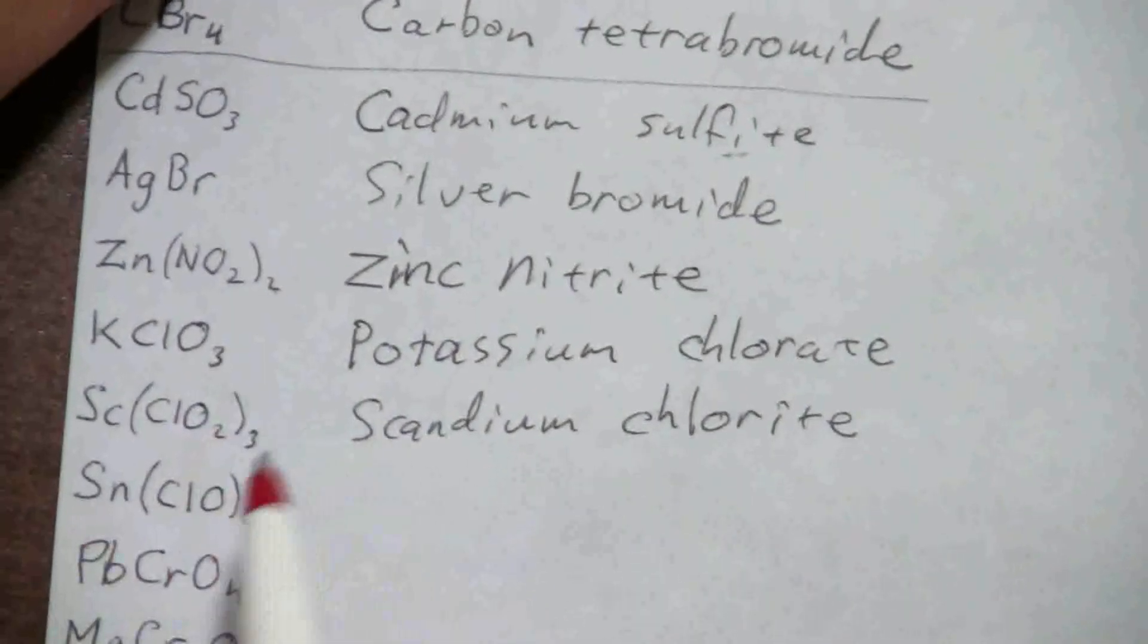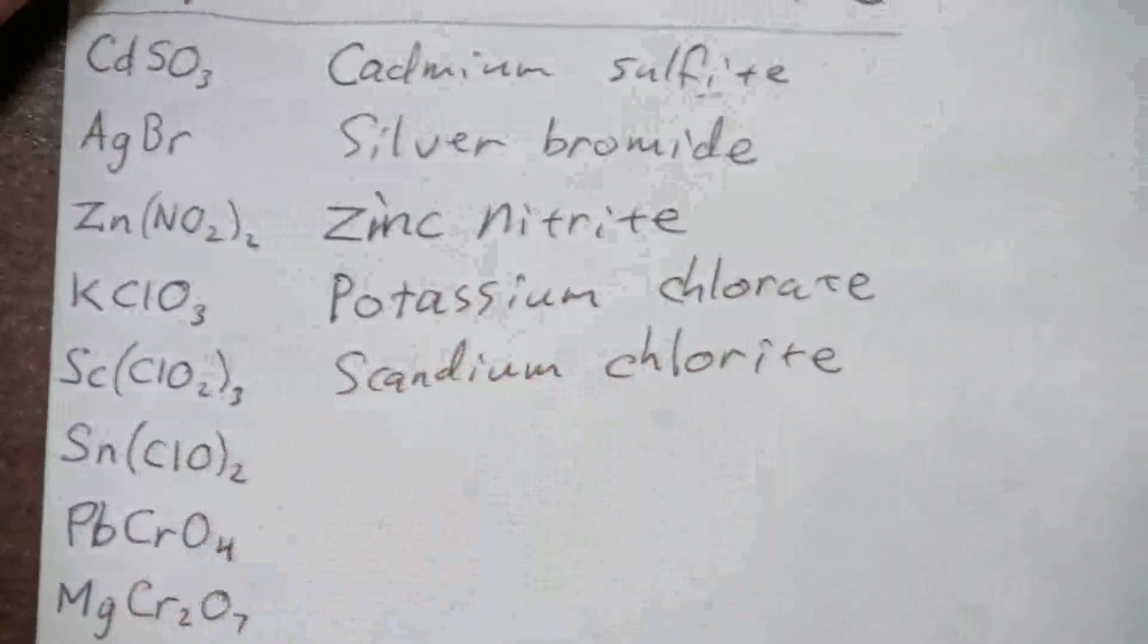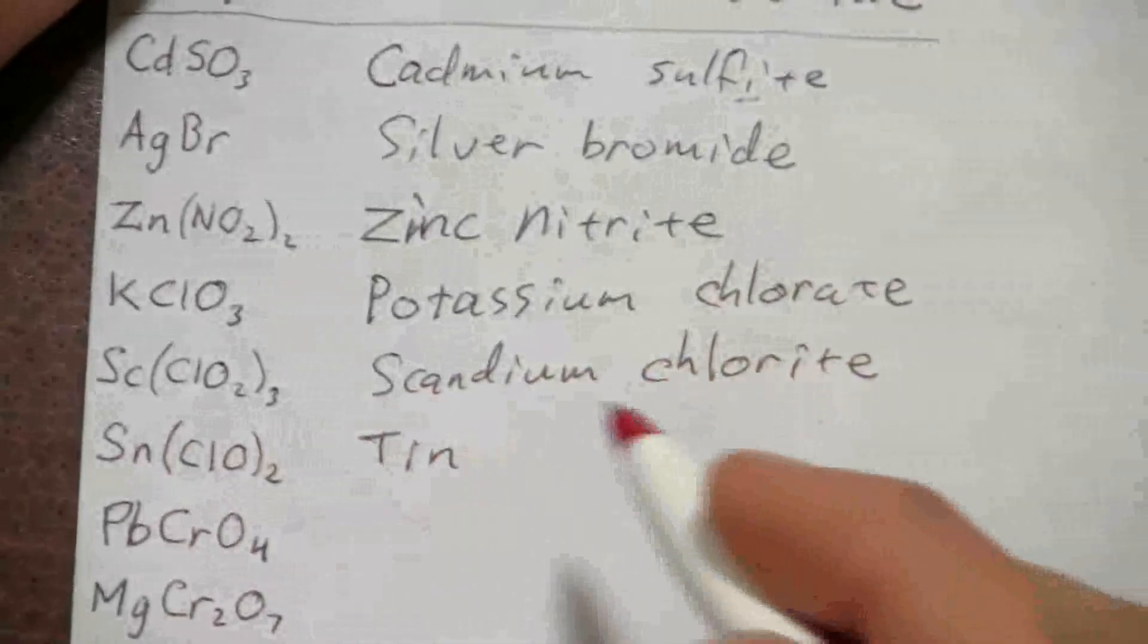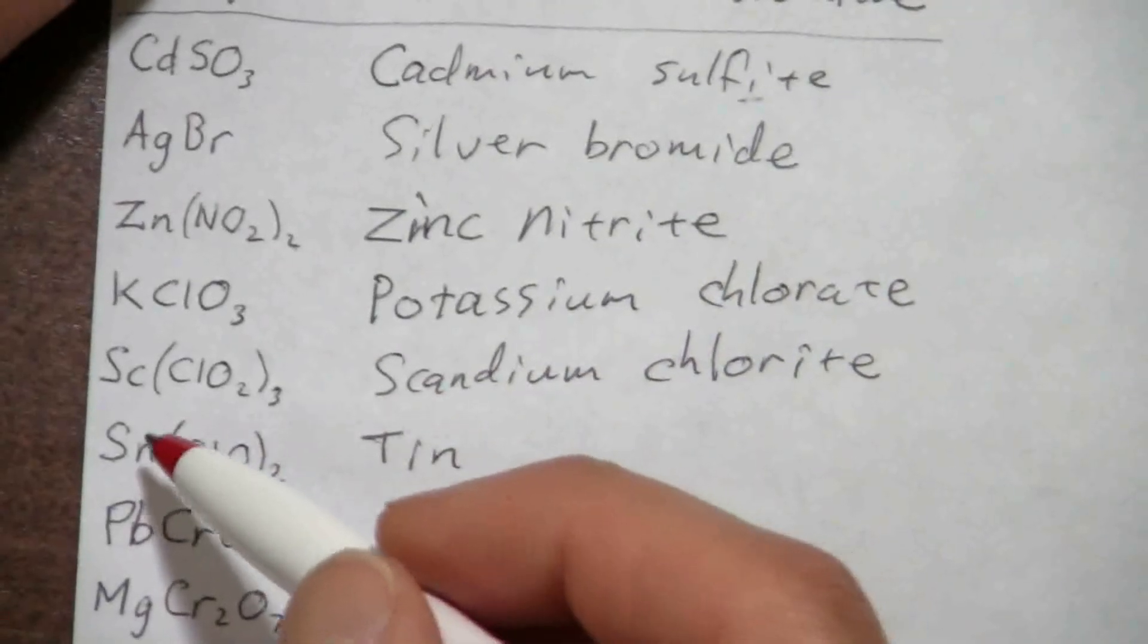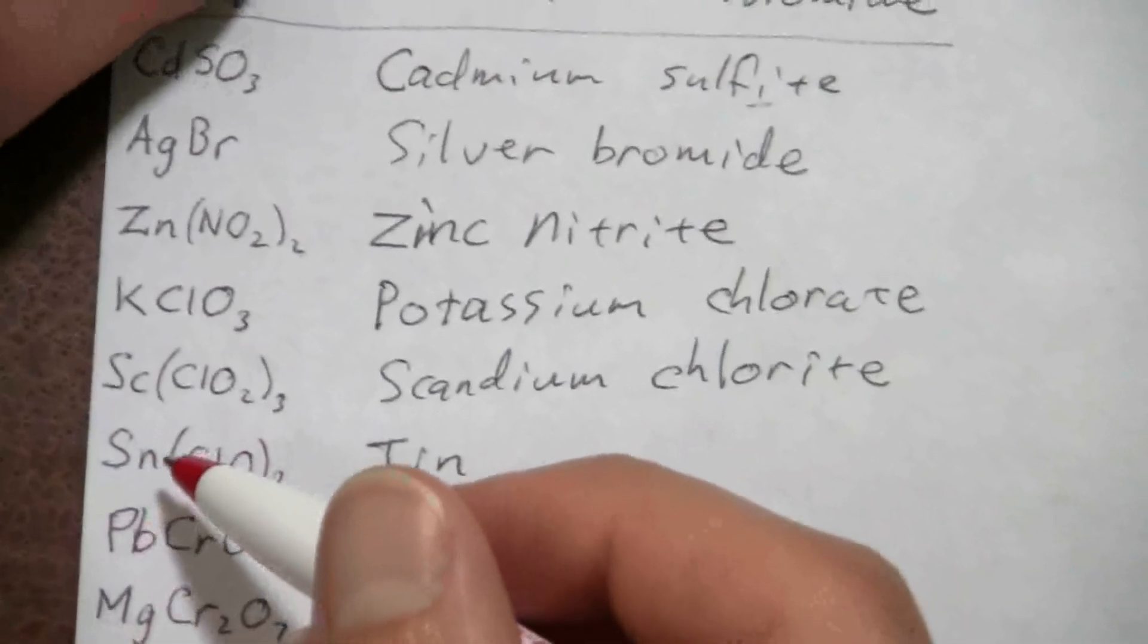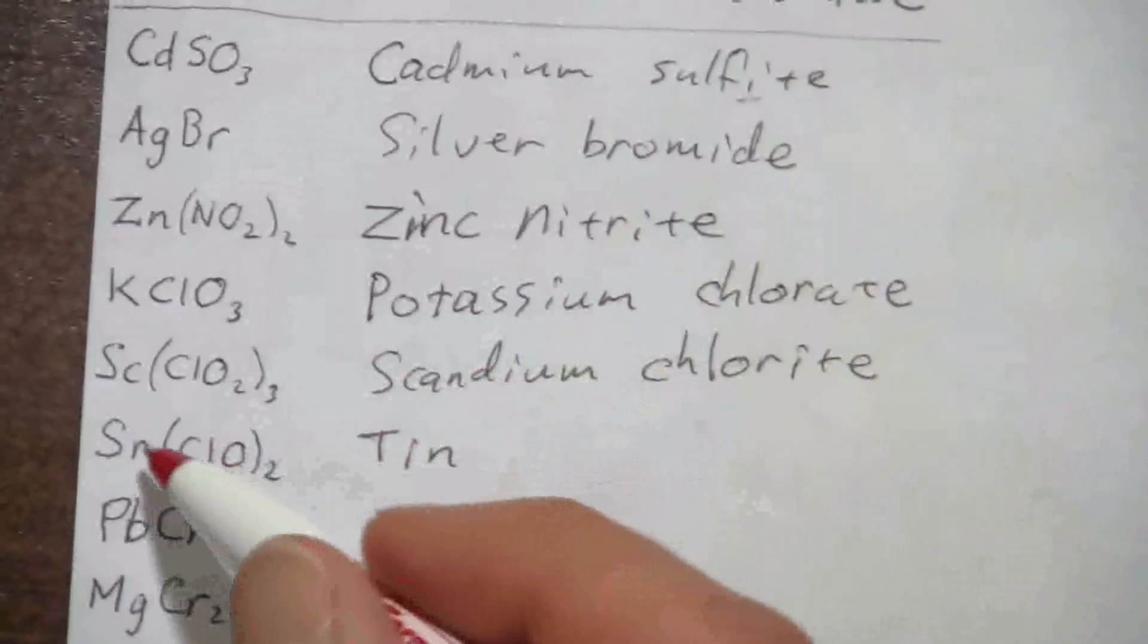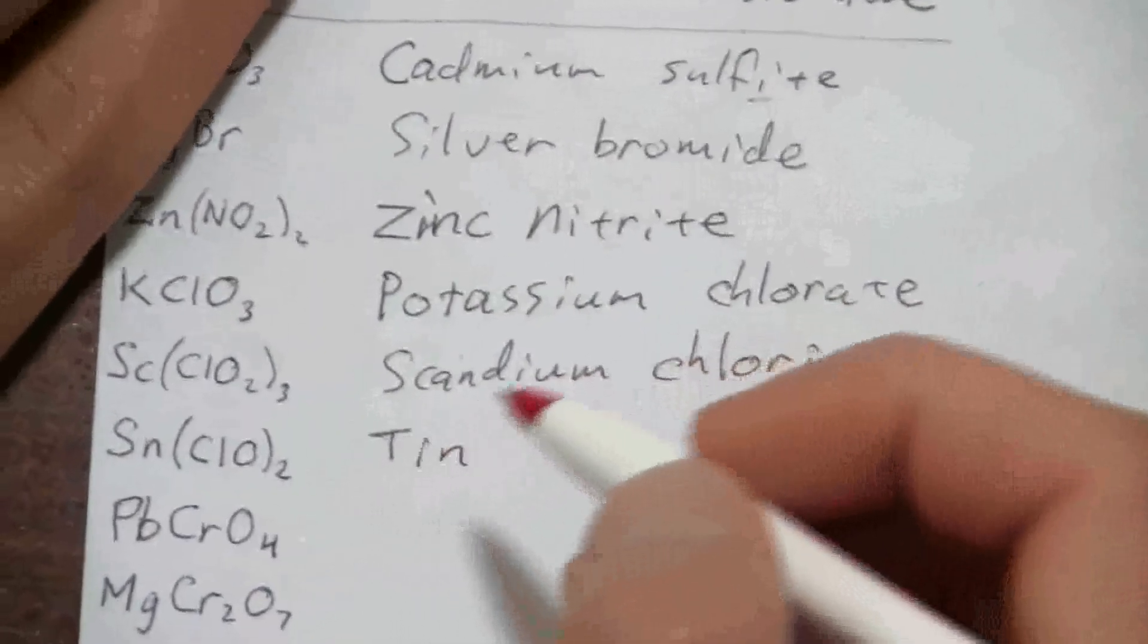Now when we get down one further than that, we change the name of that ion a little bit to reflect that. And here we have Sn, which is tin. Tin is not a transition metal, but it does have a variable charge. It's in the same group as carbon and silicon, but it's on the other side of the metal, non-metal boundary, and this is a metal. Tin does have a variable charge, and so we have to specify it there.